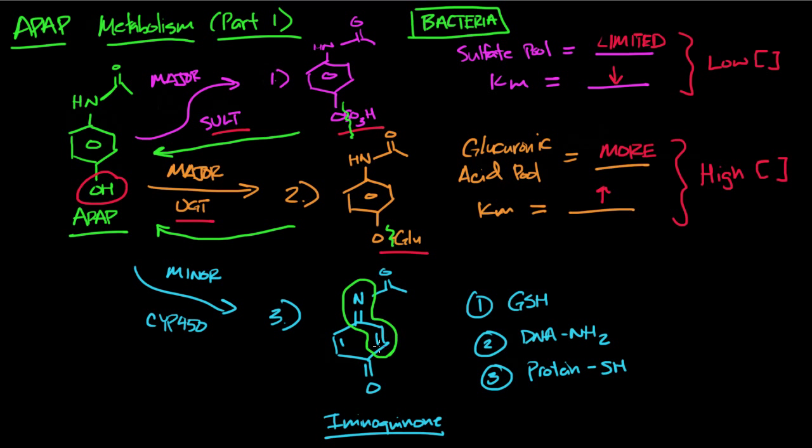This is what we call a Michael acceptor. You have a double bond conjugated with a double bond attached to like a nitrogen or an oxygen. And what's going to happen here is we have a bunch of nucleophiles, and these things can all go in there and they can attack and attach to the aminoquinone.